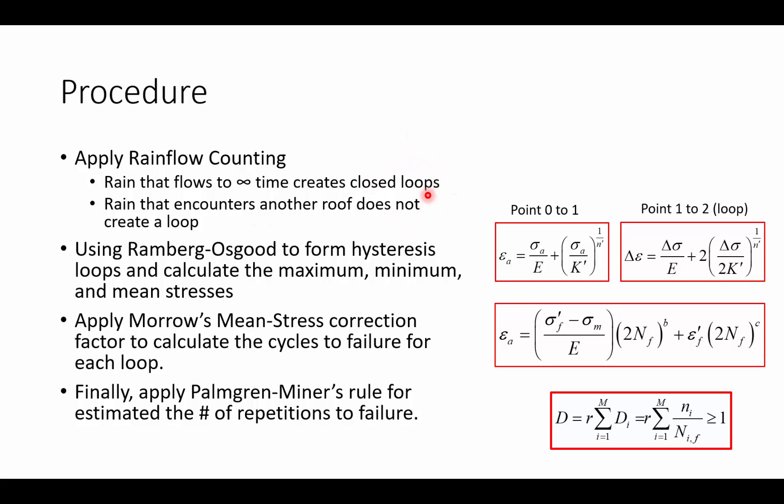Once we've created those hysteresis loops or defined what is a closed loop and what's not, we're then going to use Ramberg-Osgood to actually form the hysteresis loops and calculate the maximum, minimum, and mean stresses experienced in those loops. We would use these equations, so we would start from our origin, point 0 to 1, using this equation, and then we would close the loop using the hysteresis loop equation from point 1 to 2.